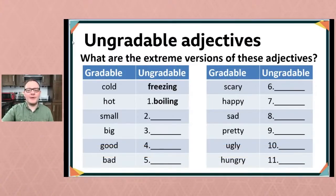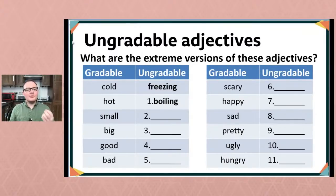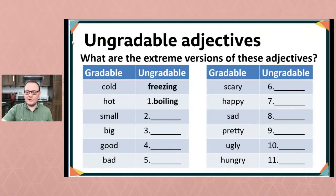Just a note on pronunciation when using extreme adjectives: we're often exaggerating what we mean. So if you say 'it's boiling in here' or 'it's roasting in here,' notice there's a really strong emphasis on the first syllable. 'It's BOILing in here. It's ROASting in here.' We're really emphasizing the stressed syllable in those words.